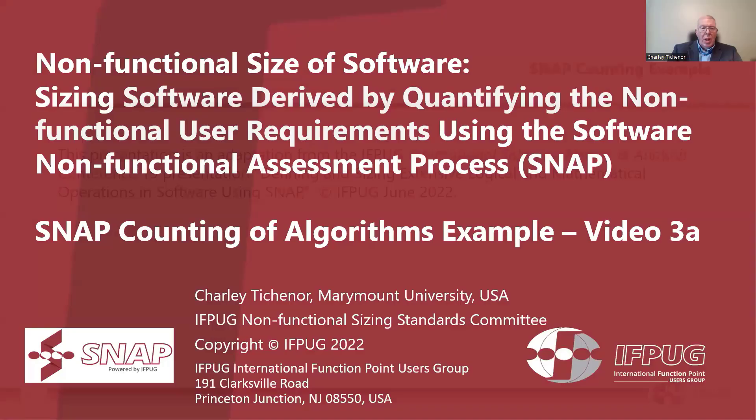We'll give two simple examples in video 3A and 3B. In video 3B we'll go into an algorithm and show you how much more difficult it is to program, and why it requires much more work effort to develop and to test, and why it should cost a lot more, even though it counts for the same number of function points. This is an adaptation from the IFPUG International Software Metrics and Analysis Conference, presented in June of 2022.